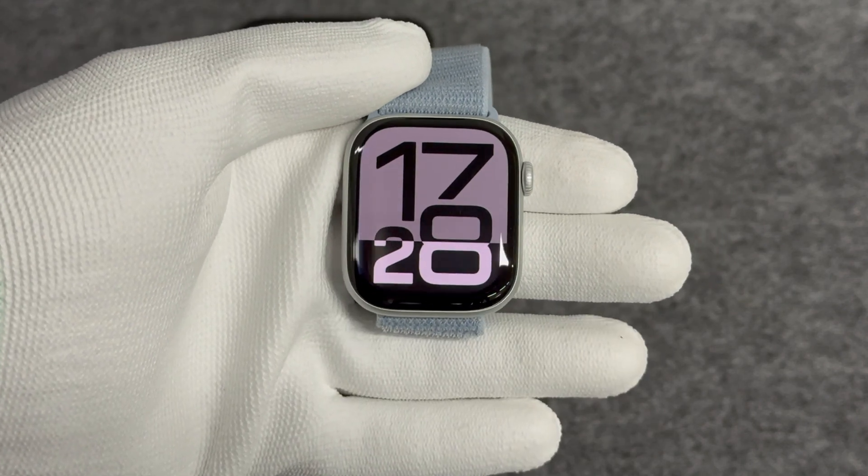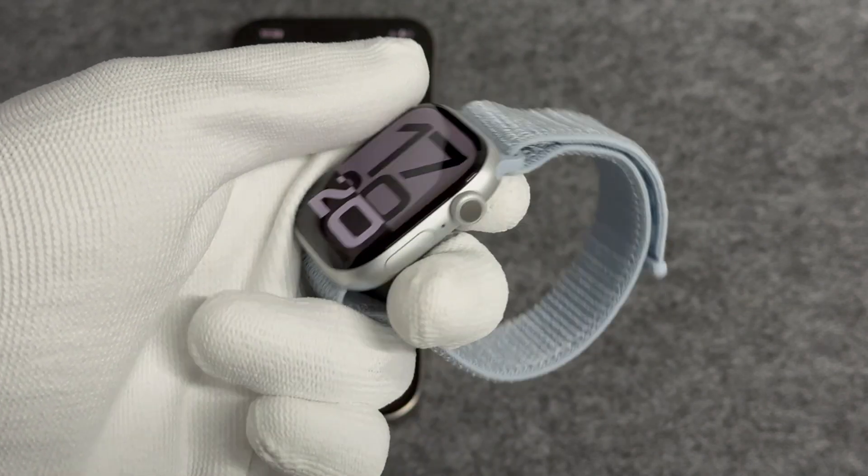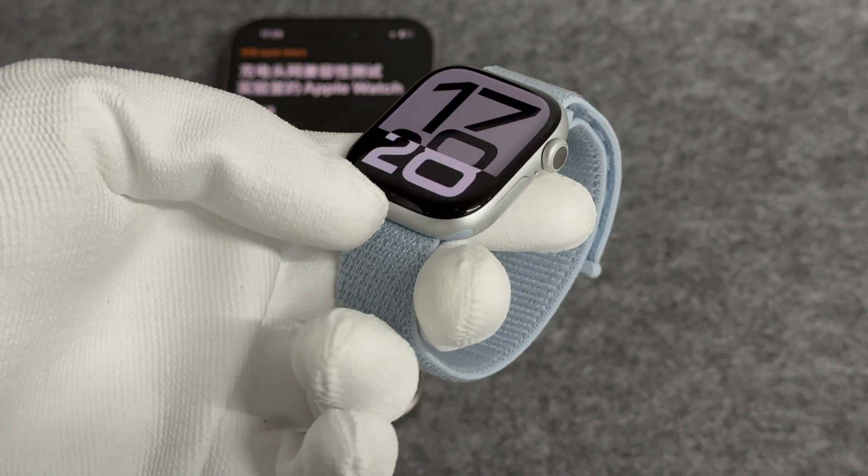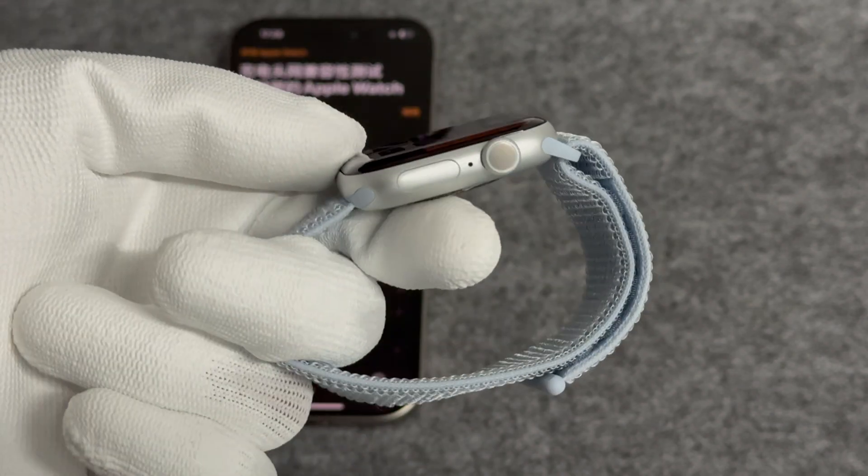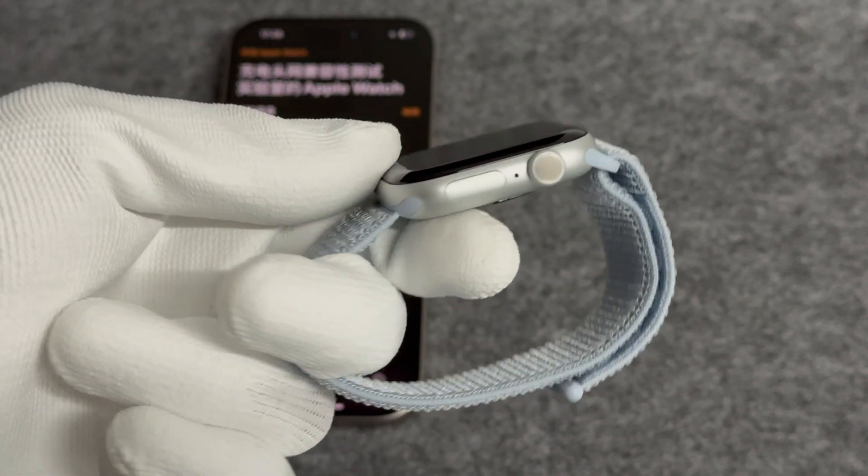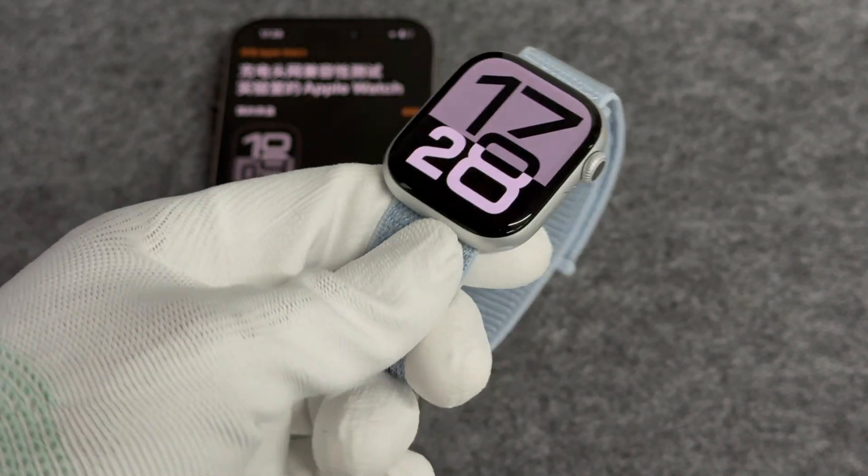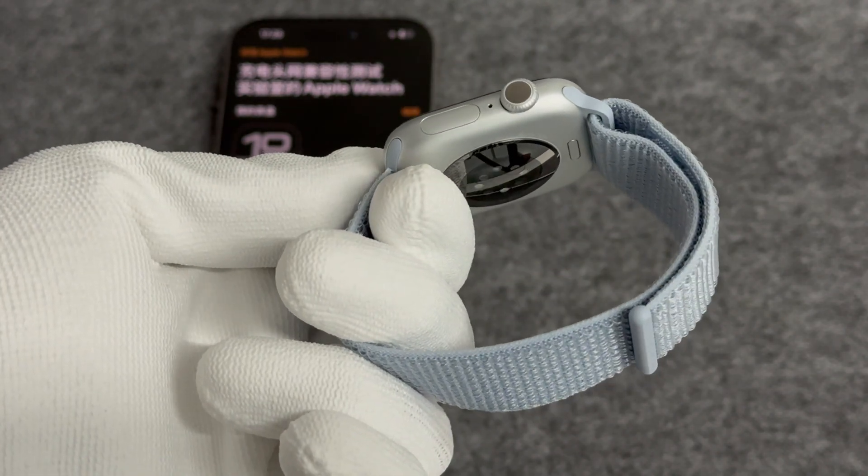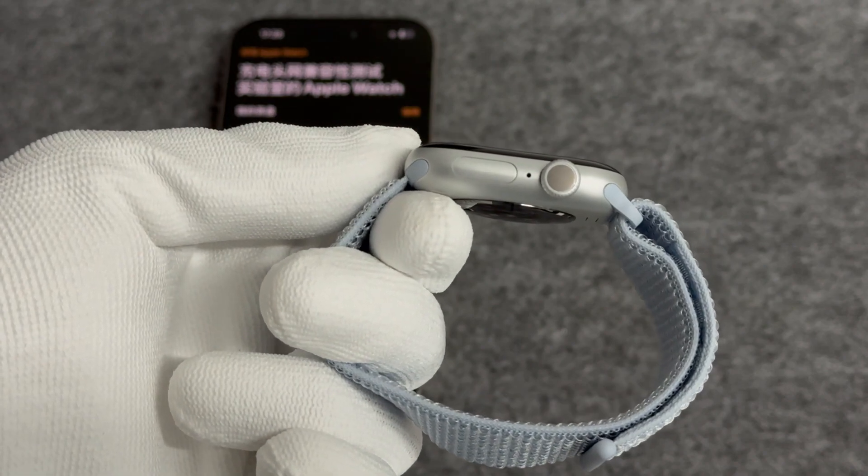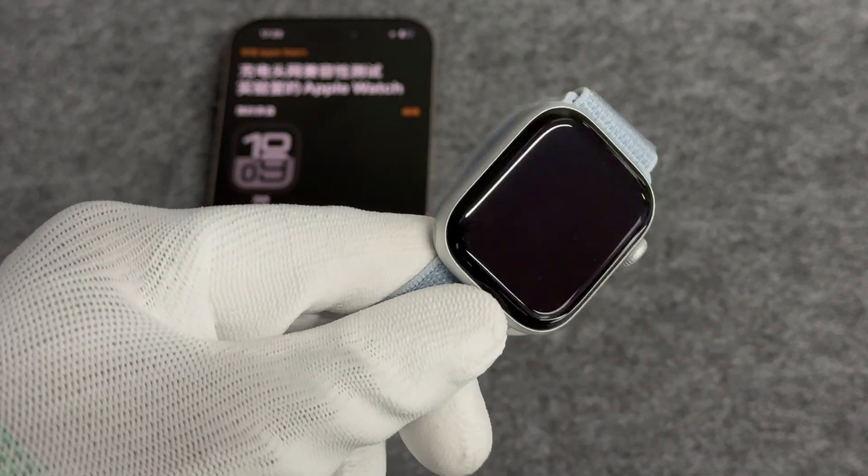The shell of this model is made of aluminum alloy, weighs 30 grams, and is 9.7mm thick. Compared with the previous generation 41mm aluminum alloy GPS version, the thickness is reduced by 1mm, and the weight is reduced by 1.9 grams. The changes are not obvious.